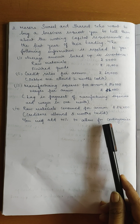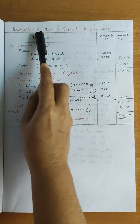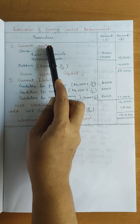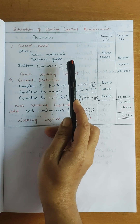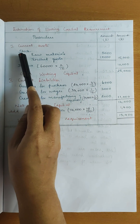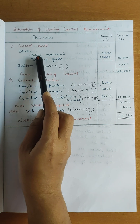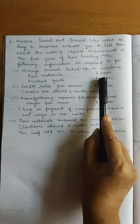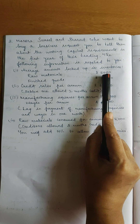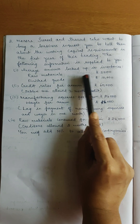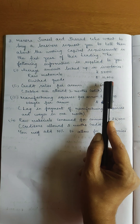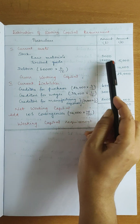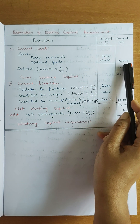Now let's look at the solution. Open the format — heading: Estimation of Working Capital Requirement, with particulars and amount columns. Start with current assets. Cash balance is not mentioned, so skip it. Under stock: raw materials 5,000 rupees and finished goods 10,000 rupees — no work in progress. So raw materials 5,000, finished goods 10,000 — add them in the inner column, total 15,000 in the outer column.